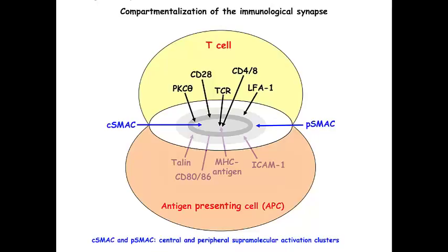This T-cell antigen presenting cell contact area, termed the immunological synapse, is formed by specific protein microclustering and segregation into two separate regions: a central core, termed the central supramolecular activation cluster, or C-SMAC, which contains the TCR and co-stimulatory receptors, and a peripheral SMAC, which contains adhesion molecules such as LFA-1.